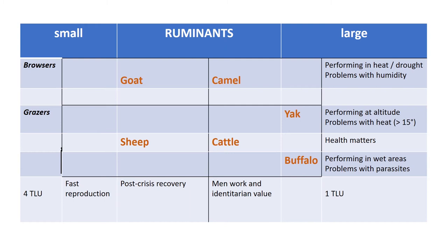The different large ruminants have different properties. Camels perform very well in very hot and dry conditions but face problems when humidity is high. Yak perform very well at high altitude and in cold environments but suffer when temperatures exceed around 14 degrees Celsius. Buffalo perform well in wet environments but have problems with parasites. Cattle, depending on the breed, perform better in dry or wet environments. Additionally, large ruminants are often associated with pastoral men, whereas children or women more commonly take care of small ruminants.